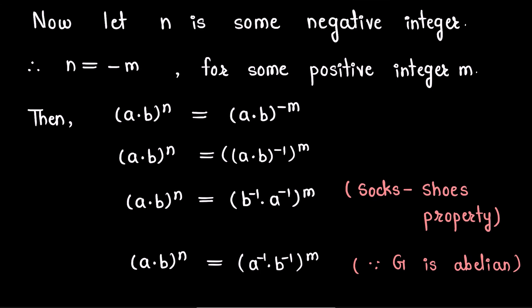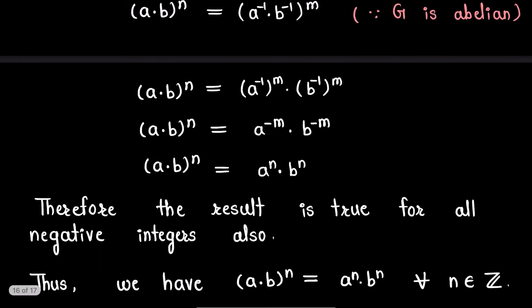Since group G is abelian, b^(−1) · a^(−1) can be written as a^(−1) · b^(−1). So we have (a·b)^n = (a^(−1) · b^(−1))^m. Since we previously proved the result is true for every positive integer, and m is a positive integer, we apply that result to write this RHS as (a^(−1))^m · (b^(−1))^m.